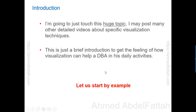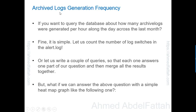Let us start with one example. We have archive logs and we need to examine or reduce archive log generation frequency for our database. If you want to query the database about how many archive logs were generated per hour along the day and across the last month, how can we answer this question? One DBA can say: let us count the number of log switches in the alert.log file — that is correct but it is the simplest way. Another DBA can say: let us write a number of queries, each query answering one part of our question, and then merge all the results together.